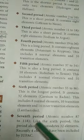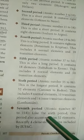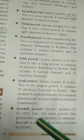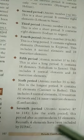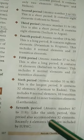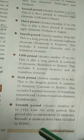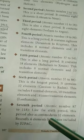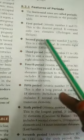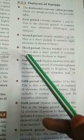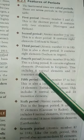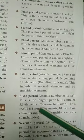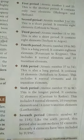The lanthanides are the inner transition elements of the sixth period. The seventh period covers atomic numbers 87 to 118. Like the sixth period, it also accommodates 32 elements. Recently, 4 elements were added by IUPAC, making the seventh period an incomplete period. To summarize: the first period is the shortest period; the second and third periods are short periods; the fourth and fifth are long periods; the sixth is the longest period; and the seventh is an incomplete period.